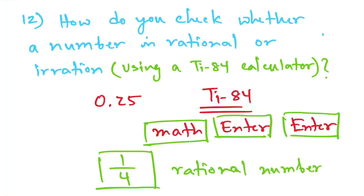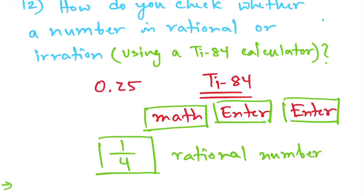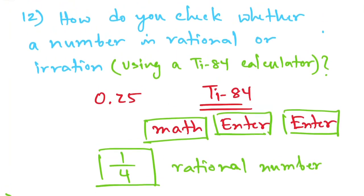A rational number is any number that can be written as a fraction. For example, 1 is also a rational number because 1 can be written as a fraction.